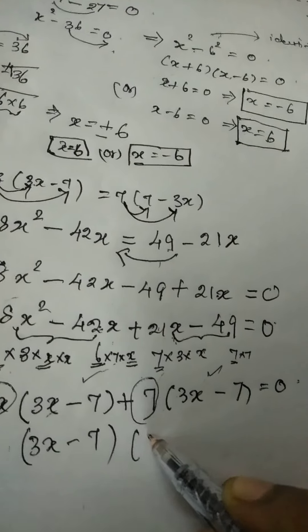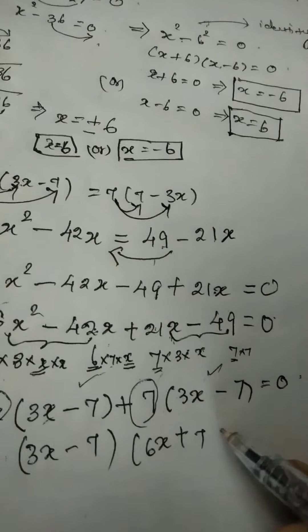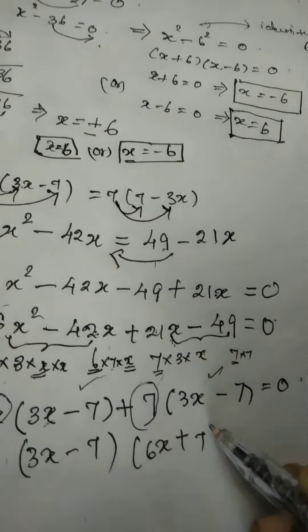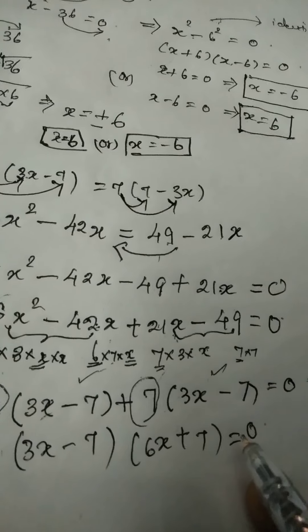So take 3x minus 7 commonly outside. So what is remaining here 6x and here it is 7, it is remaining. So write 6x plus 7 is equal to 0.